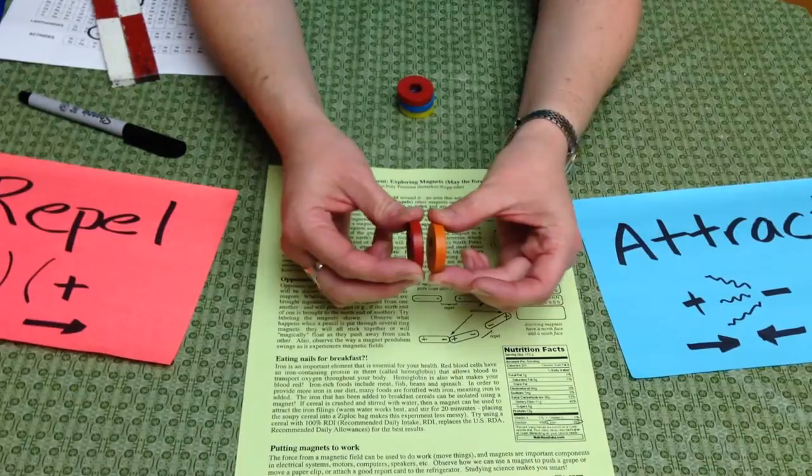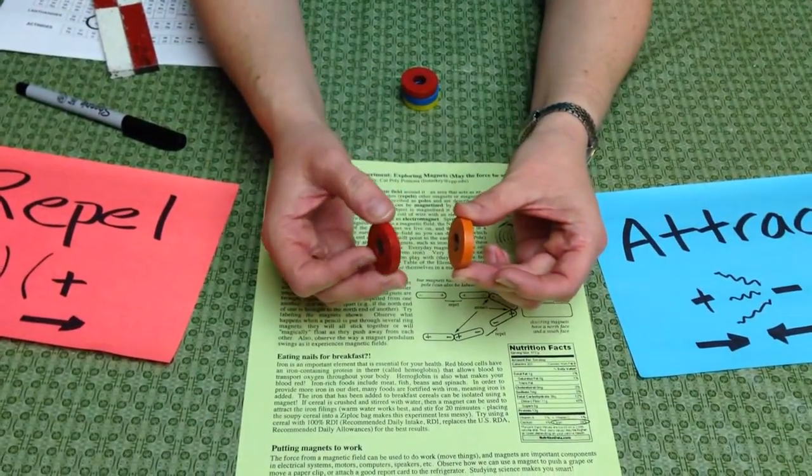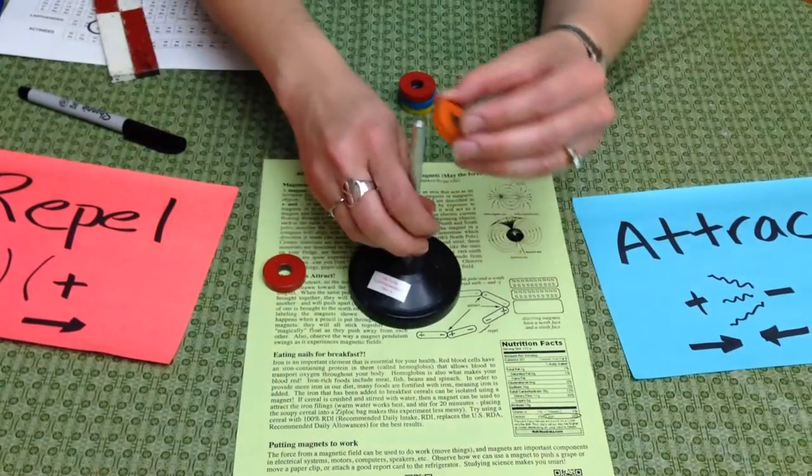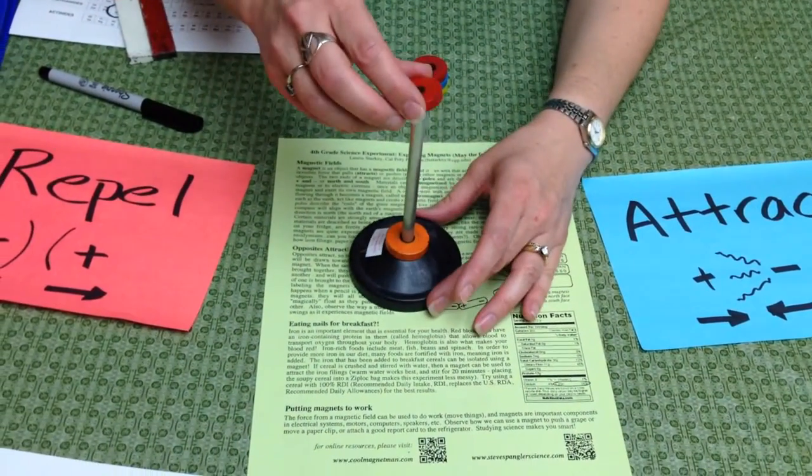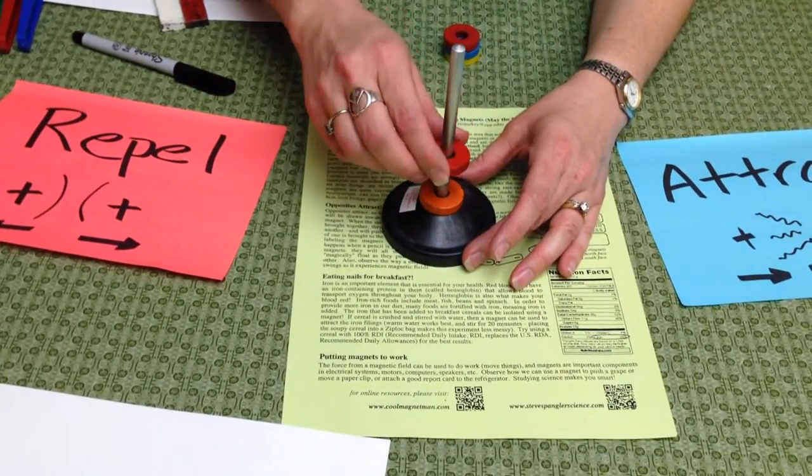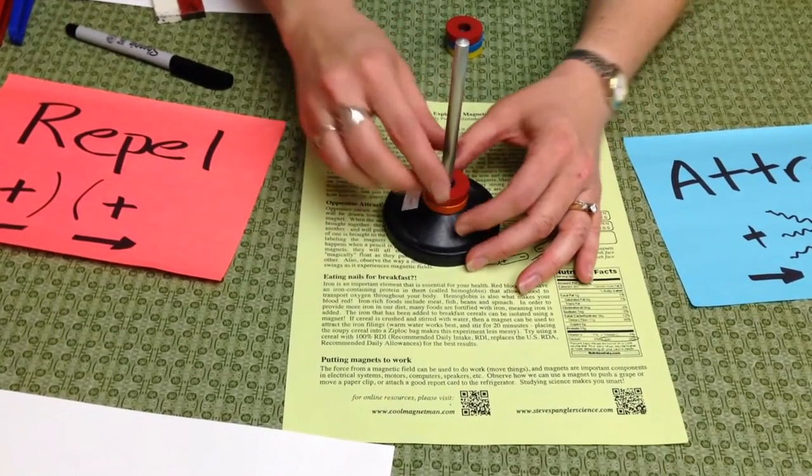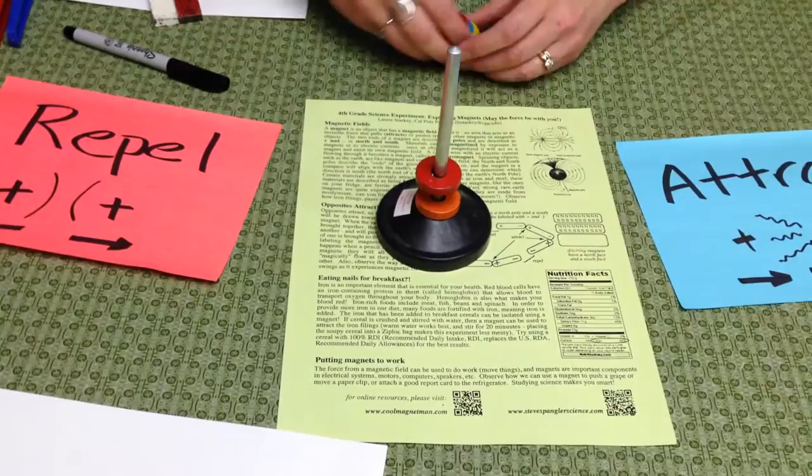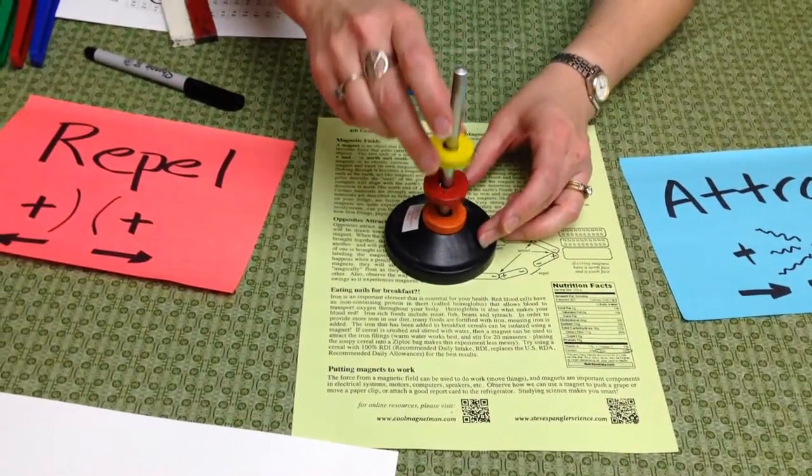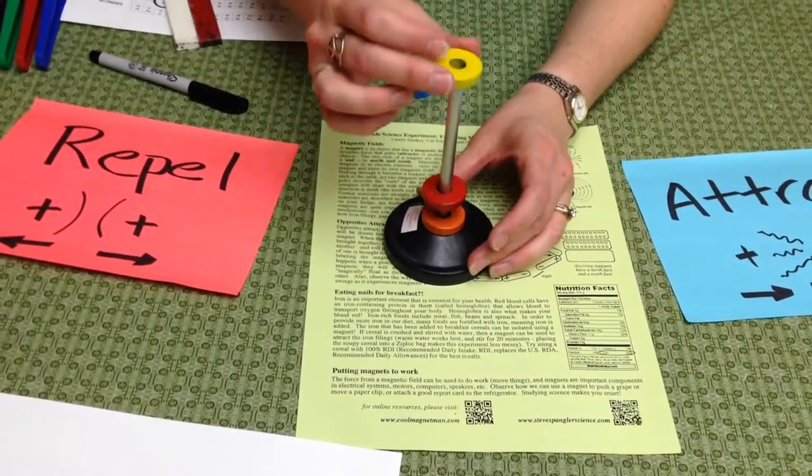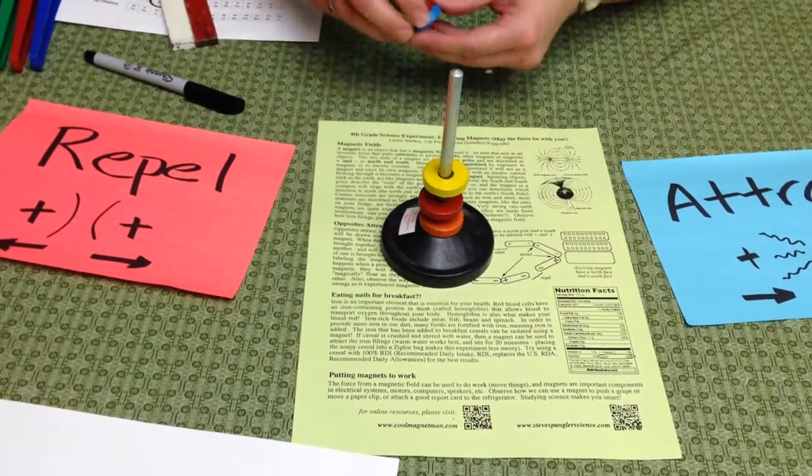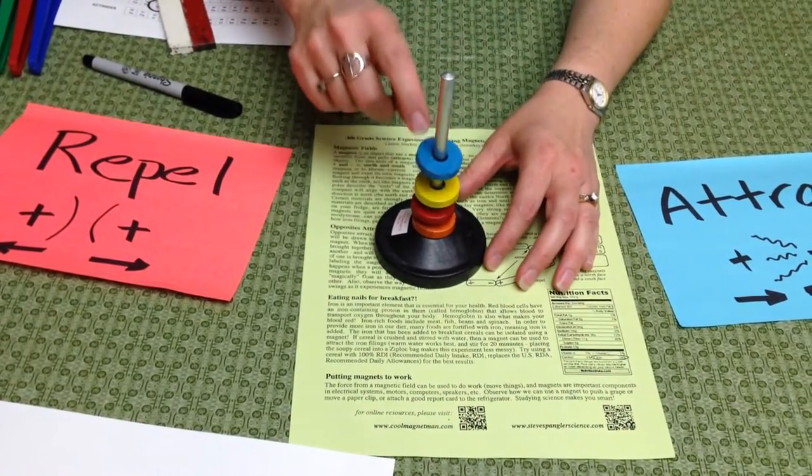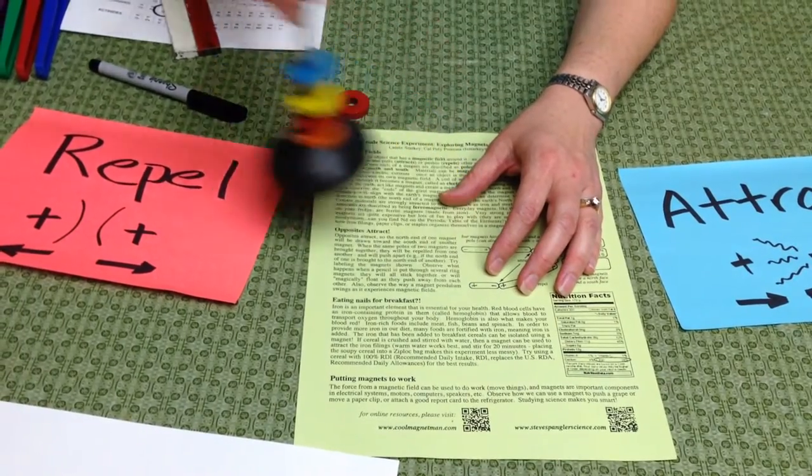If we bring these together, they repel. I can't push them together, but if I flip it, they're going to attract. We can use an interesting tool here—if we put it on a pole, they'll attract, and if I flip it over, we see that they're going to repel each other. We can get them to float and match, and if I flip it over, they're going to repel each other. We can get them to have floating disks like that—that's kind of neat.